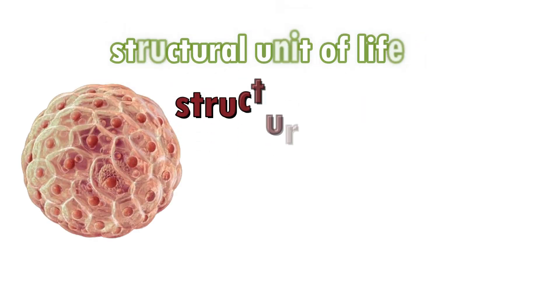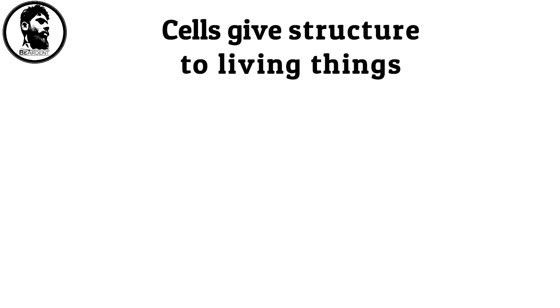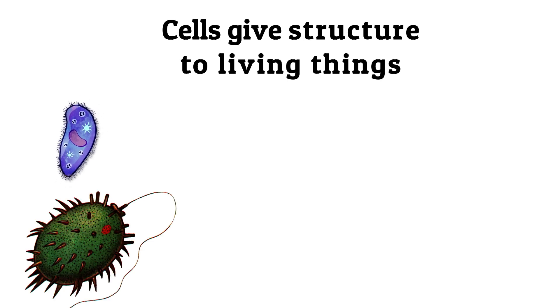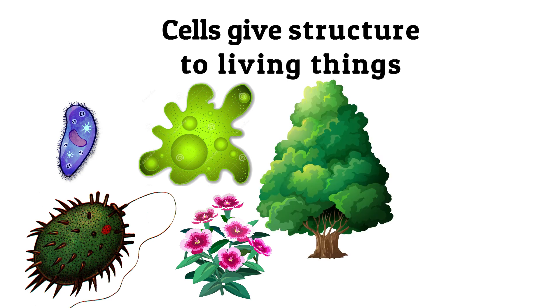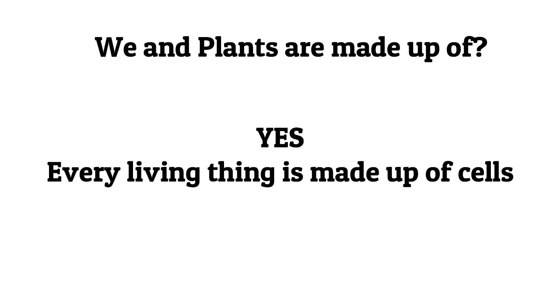Cell is known as a structural unit of life. This means that it gives structure to life and as you know only living things have life. So we can say that cells give structure to living things starting from microscopic tiny small organisms like bacteria and amoeba to plants then fruits to the big gigantic trees and animals like whales or dinosaurs. So we and plants are made up of? Yes, you're right. Every living being on this earth and out of this world is made up of cells.